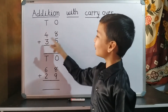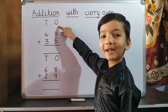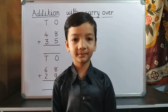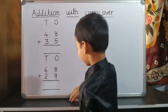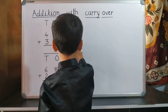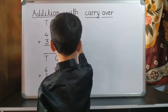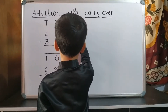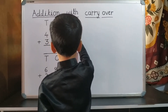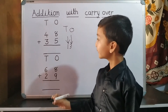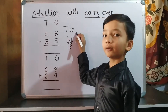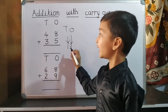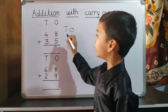48 plus 35. First we do addition of one's place. 8 plus 5 equals 13. 3 is on one's place and 1 is on ten's place.